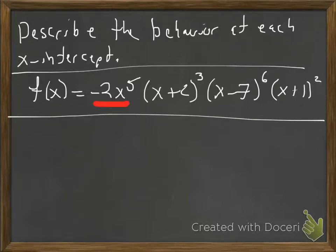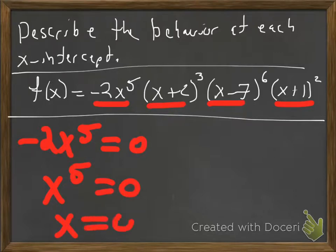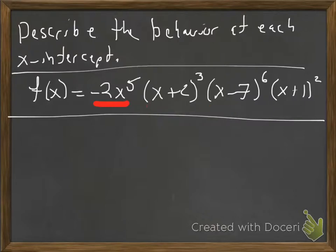So if I set each factor equal to 0, the one that usually throws people off is this one. Divide both sides by negative 2. x to the 5th is equal to 0. So the x is going to have to be 0 for that particular root. The negative 2 doesn't matter. Negative 2 is a constant. It doesn't matter in terms of x-intercepts. It matters for other stuff, though. But not for x-intercepts.